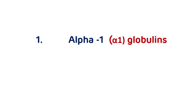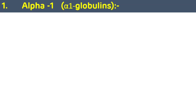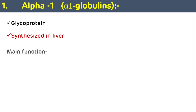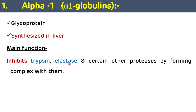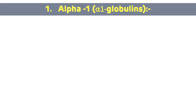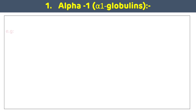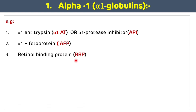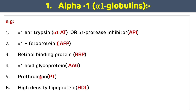First we will discuss alpha 1 globulins. Alpha 1 globulins are glycoproteins and they are synthesized in the liver. The main function of alpha 1 globulin is they inhibit trypsin, elastase, and certain other proteases by forming a complex with them. The examples of alpha 1 globulin are: alpha 1 antitrypsin (alpha 1 protease inhibitor), alpha 1 fetoprotein (AFP), retinol binding protein, alpha 1 acid glycoprotein, prothrombin, and high density lipoprotein (HDL), also known as good cholesterol.